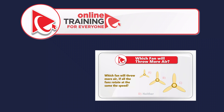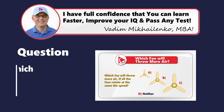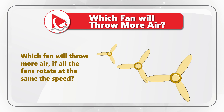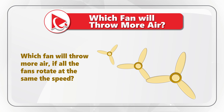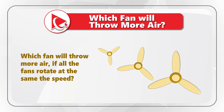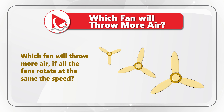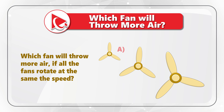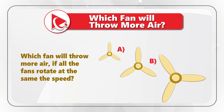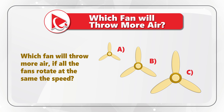This is one of the most exciting questions because it tests your analytical skills and understanding of physics. You need to determine which fan throws more air if all fans rotate at the same speed. The choices are Fan A, Fan B, Fan C, and Choice D – neither fan. Take a close look to see if you can come up with the answer.